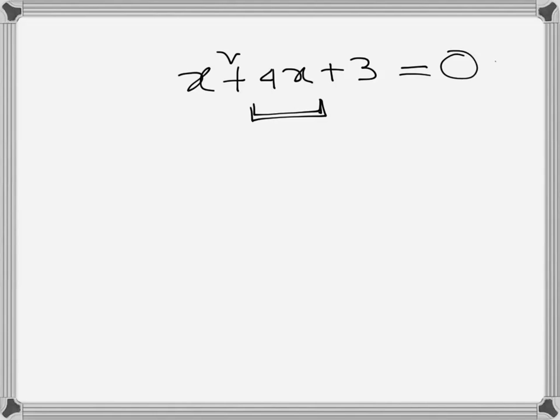So basically we will factorize this one using splitting the middle term. So this one we see that is 4, so when we say 4, four can be 3 plus 1.